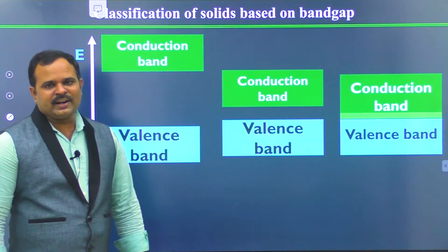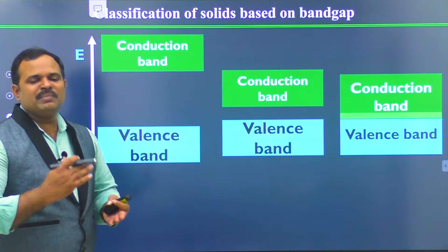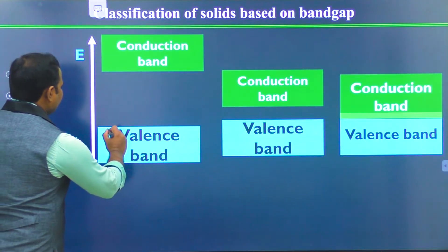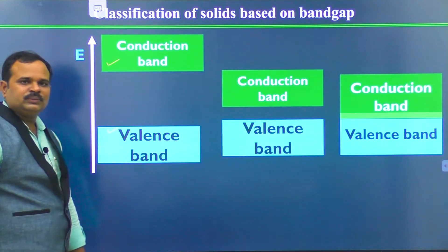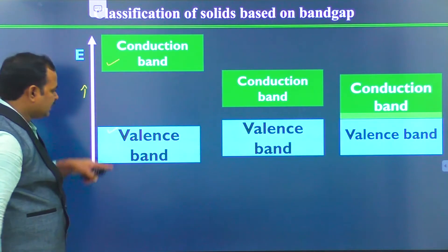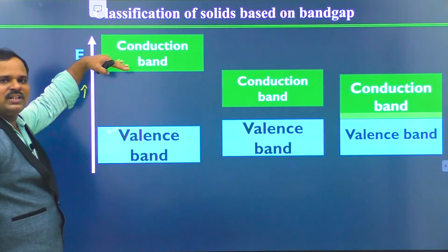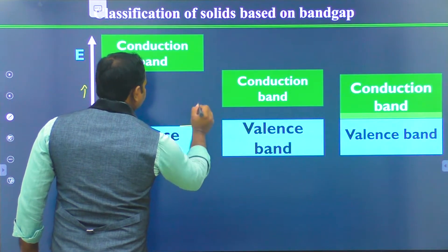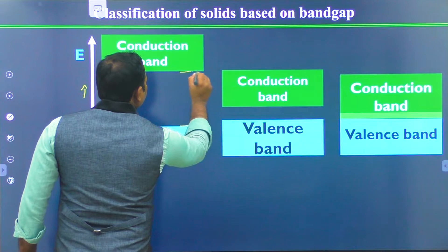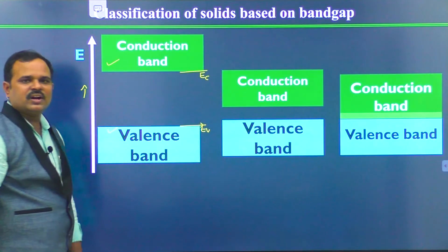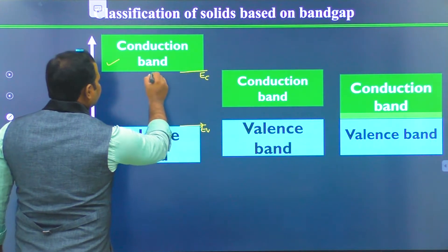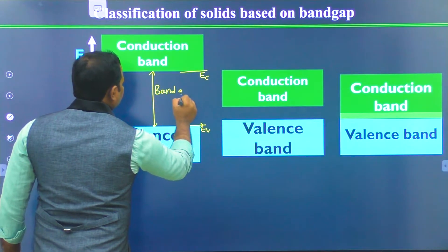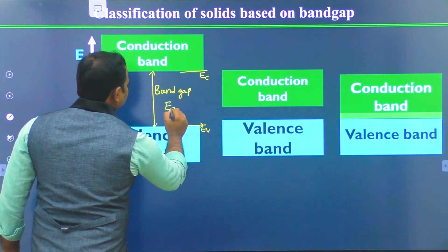Before going into the direct and indirect bandgap semiconductors, I would like to classify the materials based on the bandgap. As you can see here, this is the valence band and this is the conduction band, with increasing energy. The valence band is at lower energy and the conduction band is at higher energy. The difference between the valence band maximum EV and the bottom of the conduction band EC is called bandgap, represented as EG.